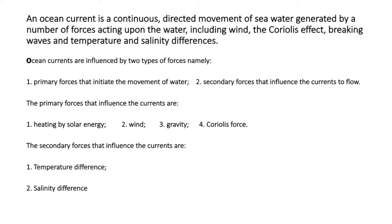What is ocean current and how is it different from waves and tides? Ocean current is a continuous directed movement of seawater that can be generated by a number of forces acting upon the water, including wind, Coriolis effect, breaking waves, temperature and salinity differences. The basic difference between waves and currents: currents are the moving of both energy and mass, while waves are the transfer of energy only, not mass. In a wave, only the energy moves in a forward or backward direction without movement of water particles.